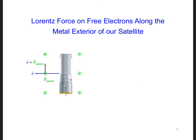When the metal exterior of the satellite moves, free electrons within the metal are dragged along with the satellite. And they will experience a Lorentz force: F on the electron is minus e times U crossed with B applied.